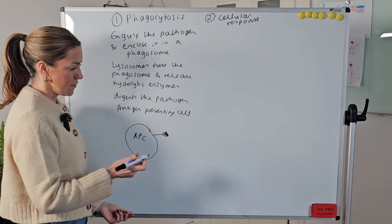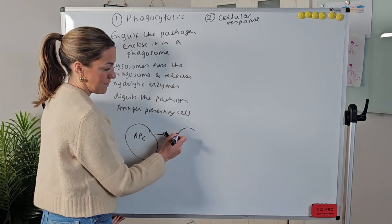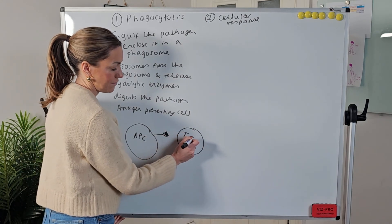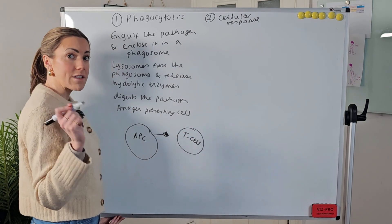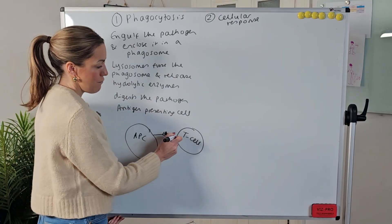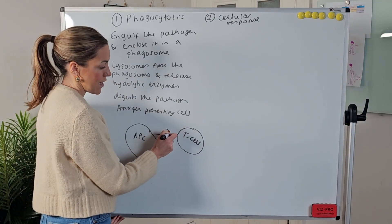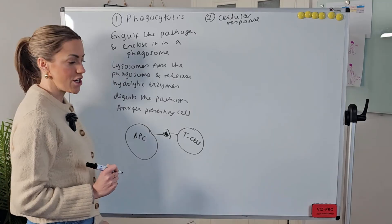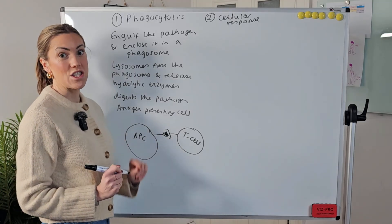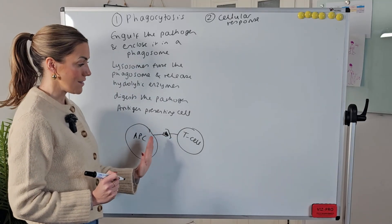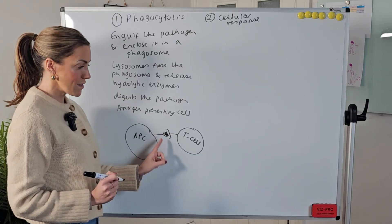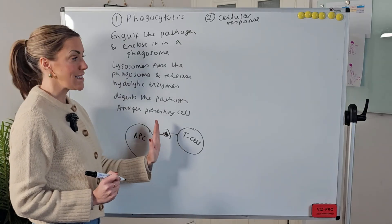So in the cellular response the T lymphocytes or the T cell with receptors on its cell surface membrane that are complementary to that antigen are going to bind to the foreign antigen that's being presented by the antigen presenting cell and once that happens it's going to activate the T cell.